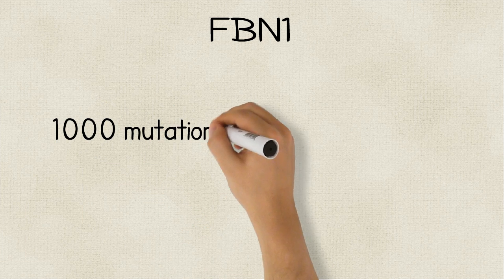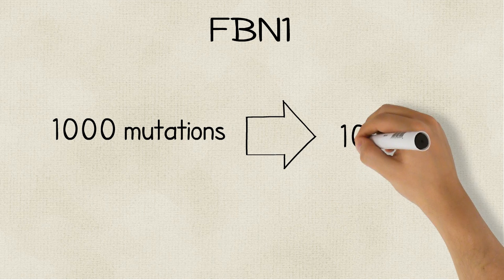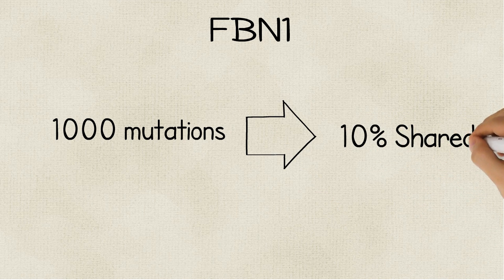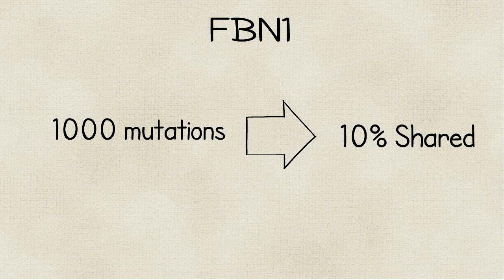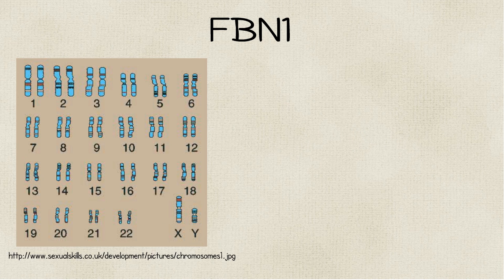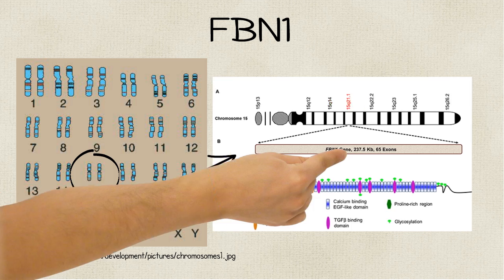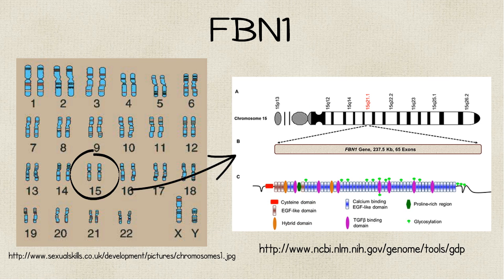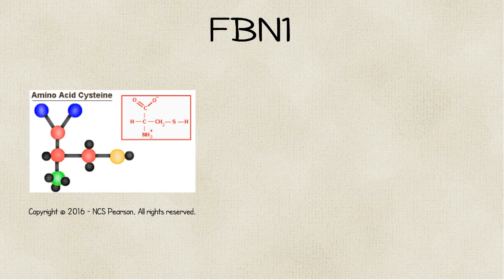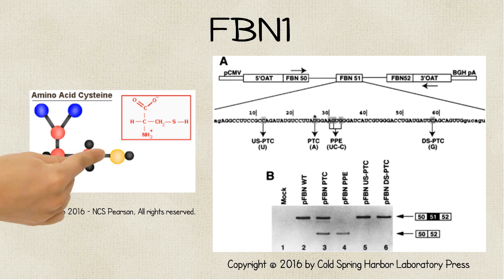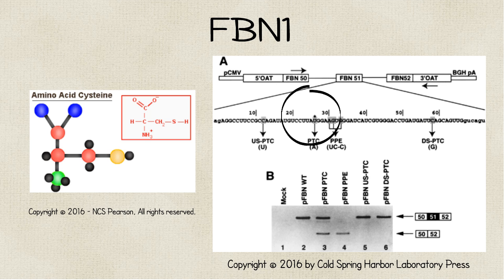There are over 1,000 identified mutations on the FBN1 gene, and only 10% of them are found to recur in different families with Marfan's. The FBN1 gene is located on the long arm, the Q arm, of chromosome 15 at location 21.1. The majority of patients exhibit a cysteine missense substitution somewhere between exons 26 and 32 at this location.